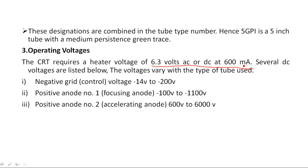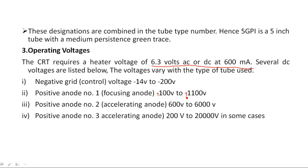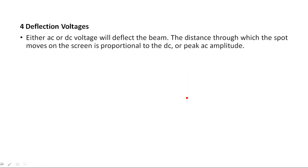There are two anodes: anode one for focusing and anode two for accelerating. Positive anode number two provides 600 volts to 6000 volts. Positive anode number one ranges from 100 to 1100 volts, and positive anode number three (accelerating anode) ranges from 200 volts to 20,000 volts. Deflecting voltages refer to how far the electron spot or beam has to travel on the screen — the sweep voltage.